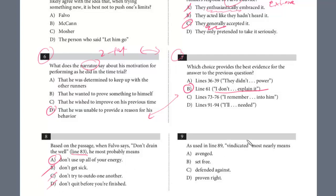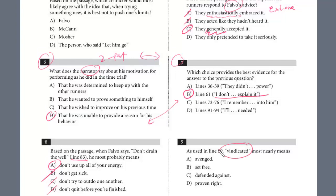And the last question, this is a word in context. What does vindicate mean? Just a general suggestion, a strategy for these words in context. If it's an easy word, it's usually the secondary meaning of the word. But if it's a harder word, it's usually just testing the definition. And so let's see what vindicated means. We're going to look in line 89.